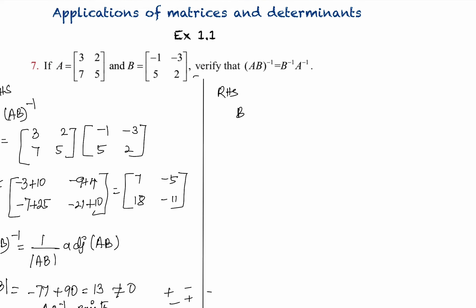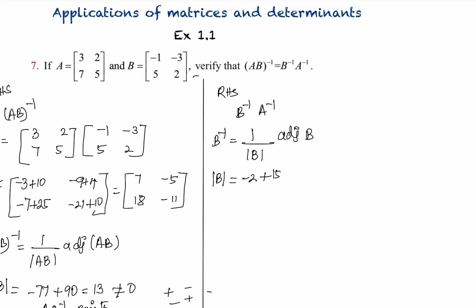Right-hand side: B⁻¹ into A⁻¹. First, B⁻¹ equals 1 by |B| into adjoint of B. The determinant |B| equals (-1)×2 - (-3)×5 = -2 + 15 = 13, which is not equal to 0. So B⁻¹ exists.